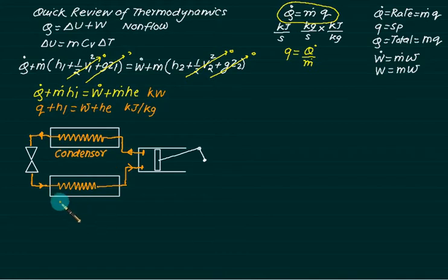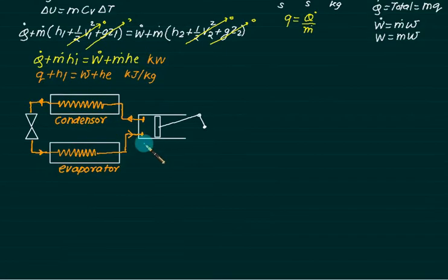We have four components: one is evaporator, one is compressor, condenser and one is expansion valve. Cycle is working anti-clockwise. This is point number one at the entry to the compressor, exit is 2. Entry to the expansion valve is 3, and entry to the evaporator is 4.